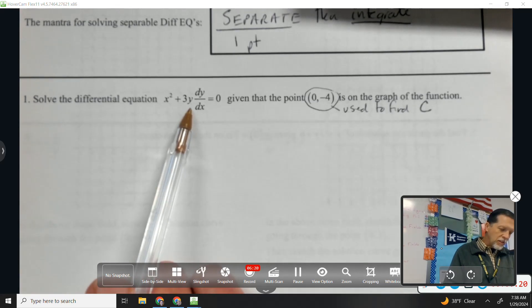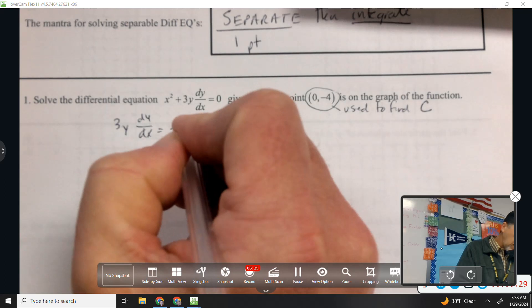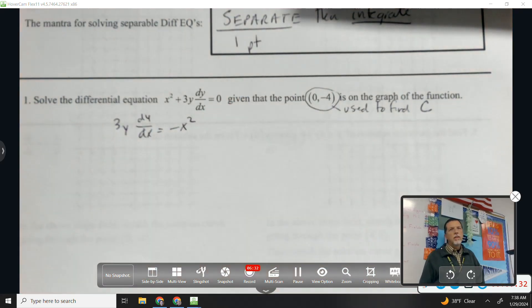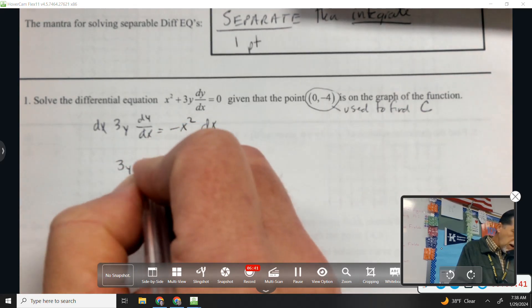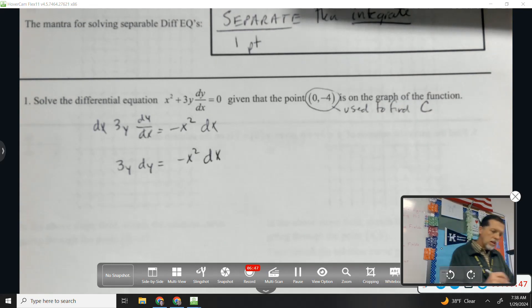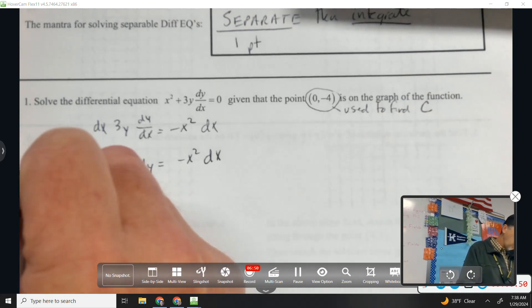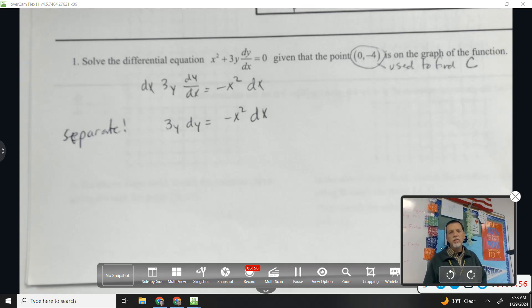I need all my y stuff on one side and all my x stuff on the other side. So let's subtract the x squared over, negative x squared. And then let's multiply both sides by dx to move it to the other side. 3y dy equals negative x squared dx. That's our separate step.